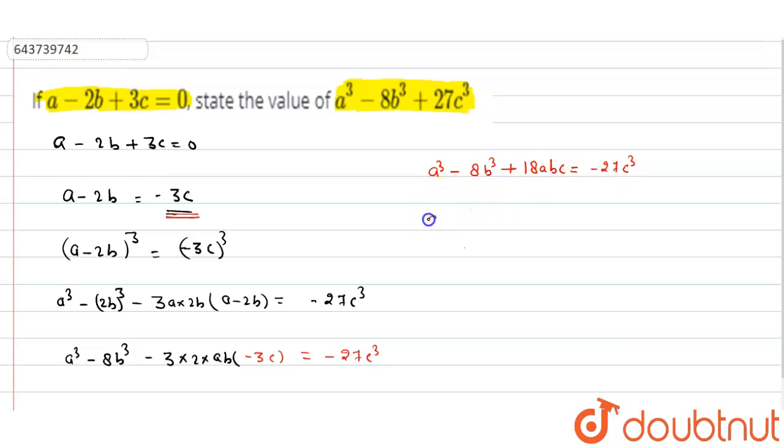So a³ - 8b³ + 27c³ is equal to -18abc. Therefore, the value of a³ - 8b³ + 27c³ equals -18abc.